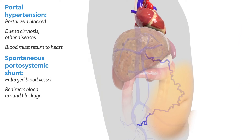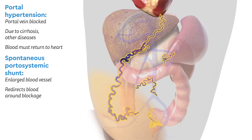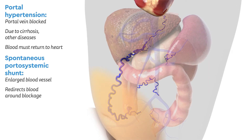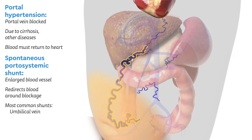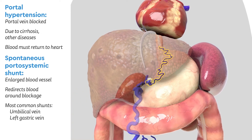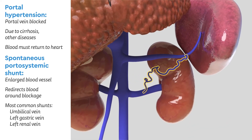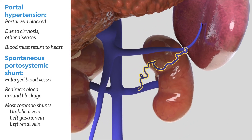Although shunts can grow anywhere, they most commonly grow here, with the most common locations being the umbilical vein and the left gastric vein. Other larger vessels, such as the left renal vein, can be used by the body to shunt blood as well.